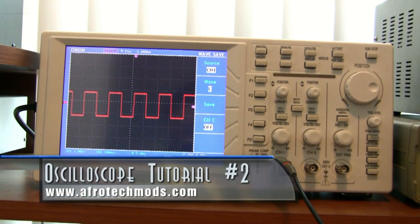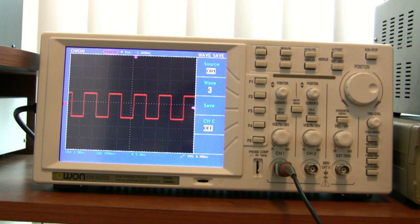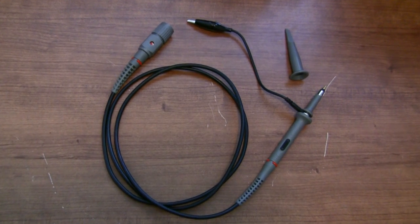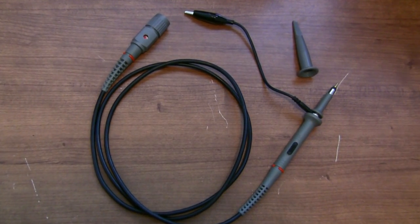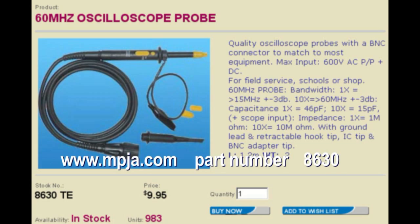This is the second part of my oscilloscope tutorial showing you how to measure stuff with an oscilloscope. The first thing you're going to have to play with is your oscilloscope probe. You should have gotten one with your oscilloscope, but if you didn't you can get one for $10 from mpja.com.